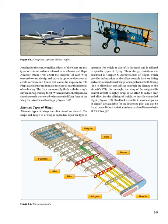Alternate types of wings are often found on aircraft. The shape and design of a wing is dependent upon the type of operation for which an aircraft is intended and is tailored to specific types of flying. These design variations are discussed in Chapter 5, Aerodynamics of Flight, which provides information on the effect controls have on lifting surfaces from traditional wings to wings that use both flexing due to billowing, and shifting through the change of the aircraft CG.